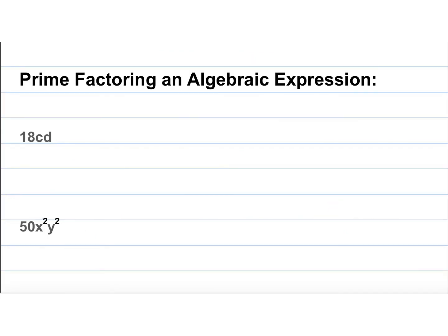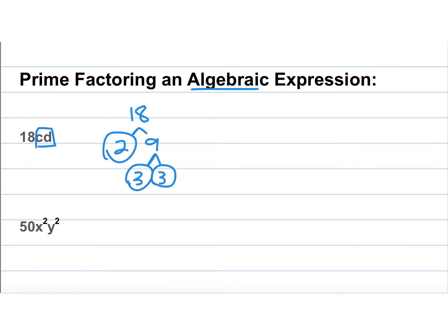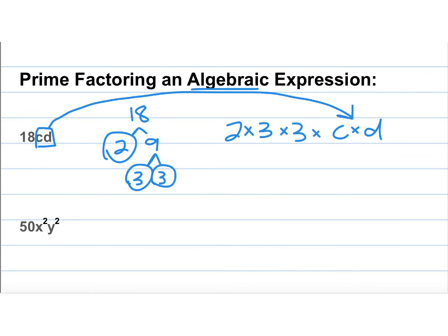Now we have prime factorization when we have an algebraic expression, which means that it involves letters. So 18CD — what we're going to do is we're going to do the prime factorization for the number, ignore the letters, and then add them on at the end. Let's start with 18 and do the factor tree: 2 times 9. 2 is prime. 9 can be split into 3 and 3, both of which are prime. So in expanded form we would have 2 times 3 times 3 times C times D. Notice I took those letters and added them on at the end, splitting them up as C times D.